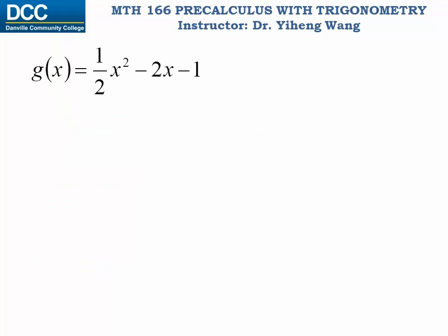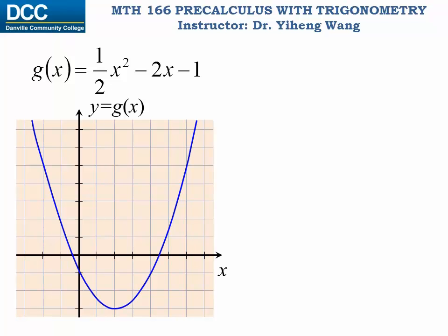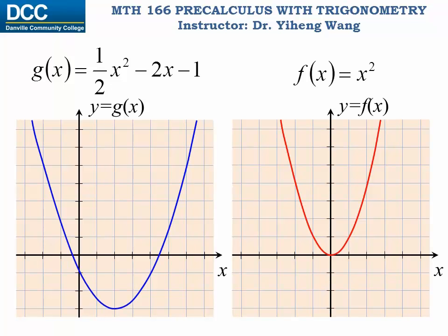This is an example of a quadratic function written in its general form, and here is its graph. Here is the graph for the parent function f equals x squared, also known as the squaring function. As you can see, these two graphs have many similarities — they both have a U shape and they are both symmetric about a vertical line. One of the reasons why we are studying parent functions now is so that in the future we can use the knowledge of a parent function to help us sketch the graphs for other functions.